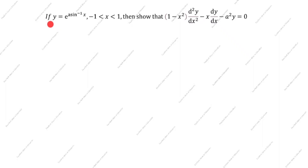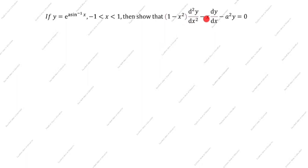Hi friends, welcome to my channel Excellent Ideas in Education. Today we are going to solve this differentiation problem. If y is equal to e to the power a·sin⁻¹(x), where -1 < x < 1, then show that (1 - x²)·d²y/dx² - x·dy/dx - a²y = 0.